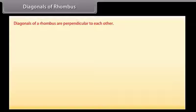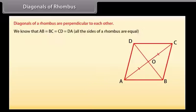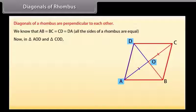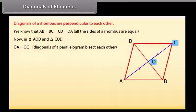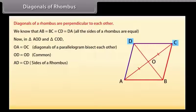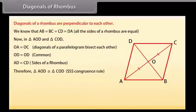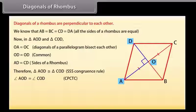Diagonals of a rhombus: Let us now prove that the diagonals of a rhombus are perpendicular to each other. Consider rhombus ABCD. We know AB = BC = CD = DA because all sides of a rhombus are equal. In triangle AOD and triangle COD: OA = OC (diagonals of a parallelogram bisect each other), OD = OD (common), and AD = CD (sides of a rhombus).